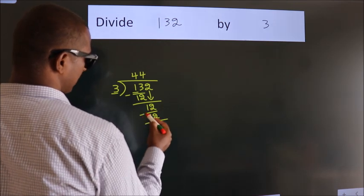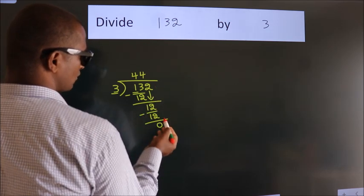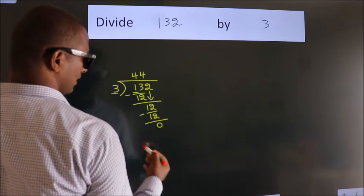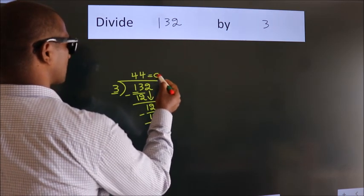Now, we subtract. We get 0. After this, no more numbers to bring down. And we got remainder 0. So, this is our quotient.